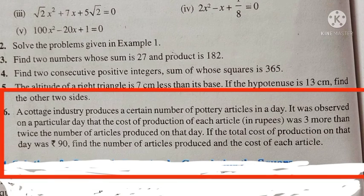Question number six: a cottage industry produces a certain number of pottery articles in a day. It has been observed on a particular day that the cost of production of each article was three more than twice the number of articles produced on that day. If the total cost of production on that day was Rs 90, find the number of articles produced and the cost of each article.